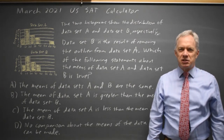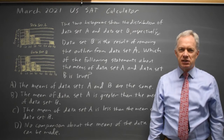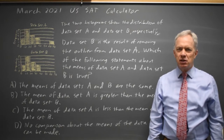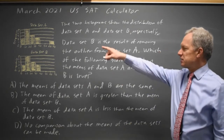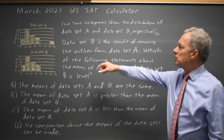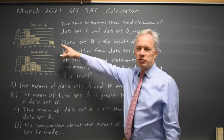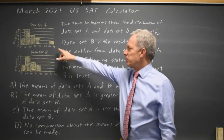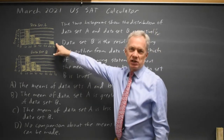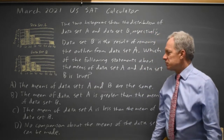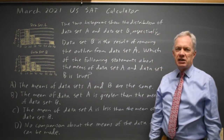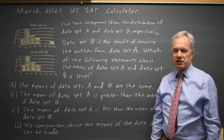I'm Dr. Roger, and this question is from the March 2021 U.S. SAT calculator section. College Board is asking about two data sets where data set A is converted to data set B by removing a high outlier. The question is: what effect does this have on the mean of the data set?